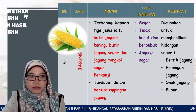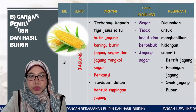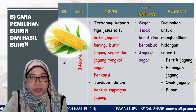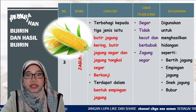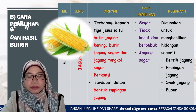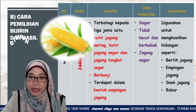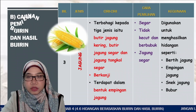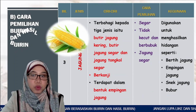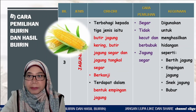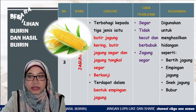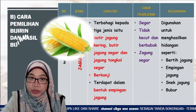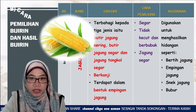Bijirin yang ketiga ialah jagung. Jagung terbahagi kepada 3 jenis iaitu butir jagung kering, butir jagung segar dan jagung tongkol segar. Jagung juga berkanji dan terdapat dalam pelbagai bentuk empingan jagung. Cara pemilihan: jagung mestilah segar, tidak kecut dan tidak berbubuk. Kegunaan jagung ialah untuk menghasilkan hidangan seperti bertih jagung, empingan jagung, snek jagung dan bubur.